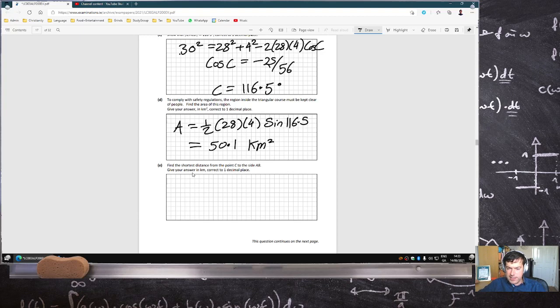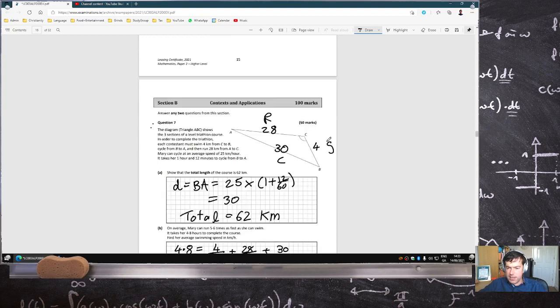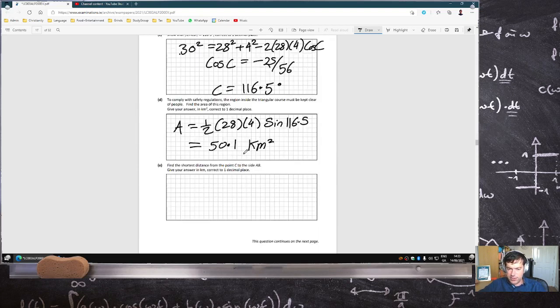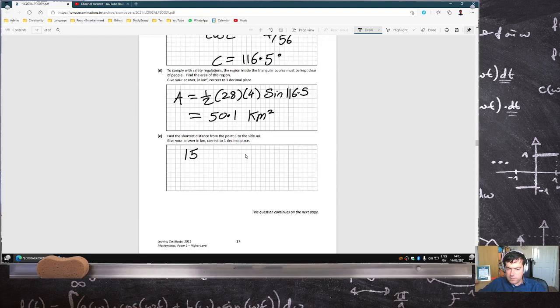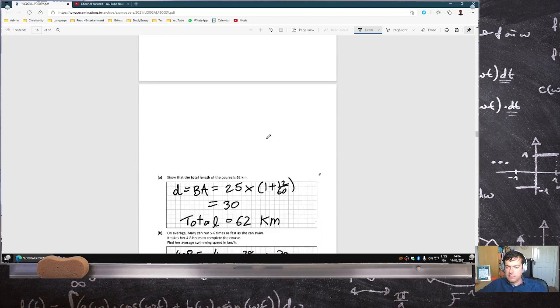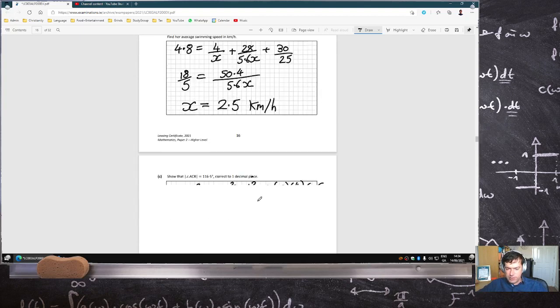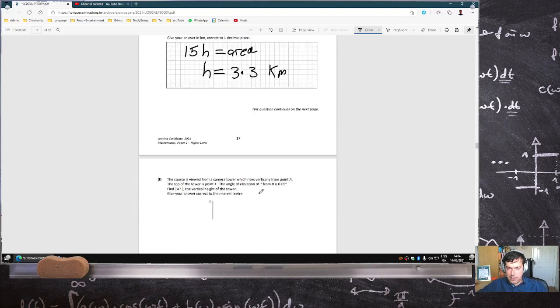Find the shortest distance from point C to the side AB. Yeah. So that's the height. You can say the area, a half base by the height. So a half 30 is 15. 15H has to equal the area we just got. 3.3 km. Does that look reasonably right? Yeah, that could be 3.3.